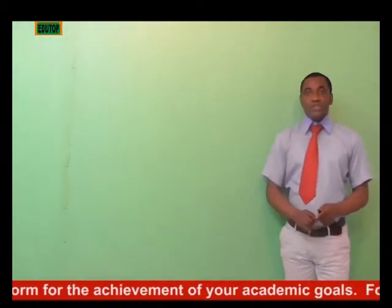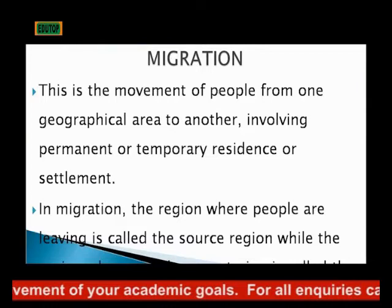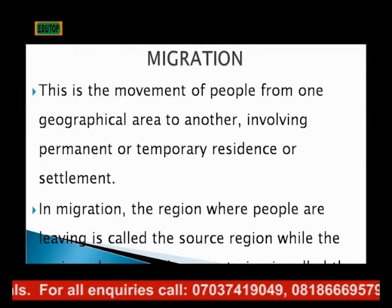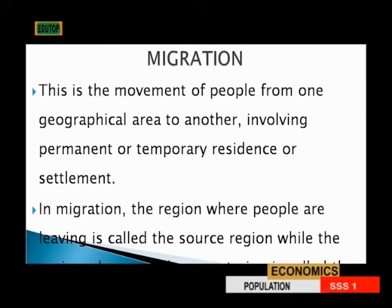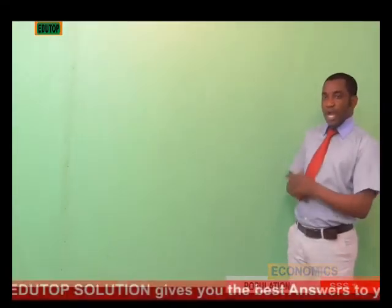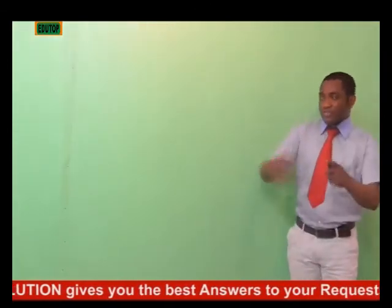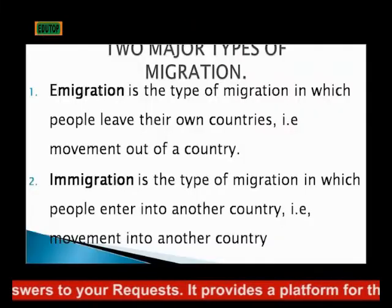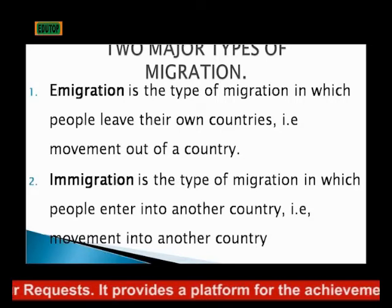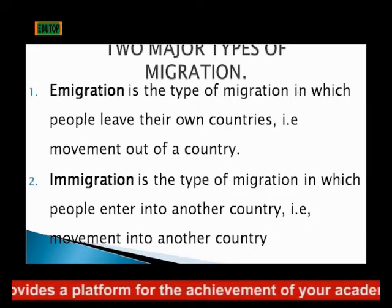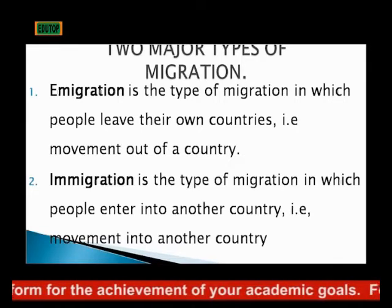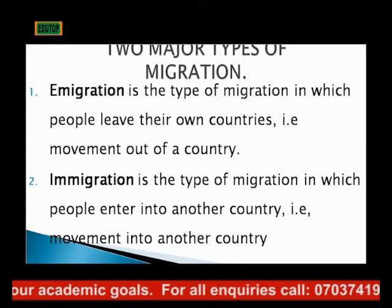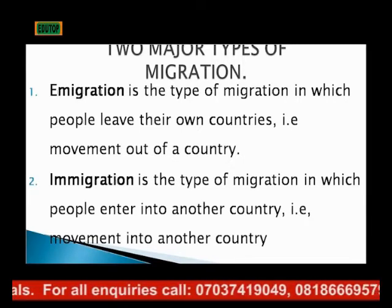Now, another factor is migration. This is the movement of people from one geographical area to another, involving permanent or temporary residence or settlement. In migration, the region where people are leaving is called the source region, while the region where people are entering or moving into is called the receiving or destination region. We have two major types of migration. One, we have emigration, which is when people leave their own country and move to another country. The second is immigration, which is when people move from another country into a particular country.